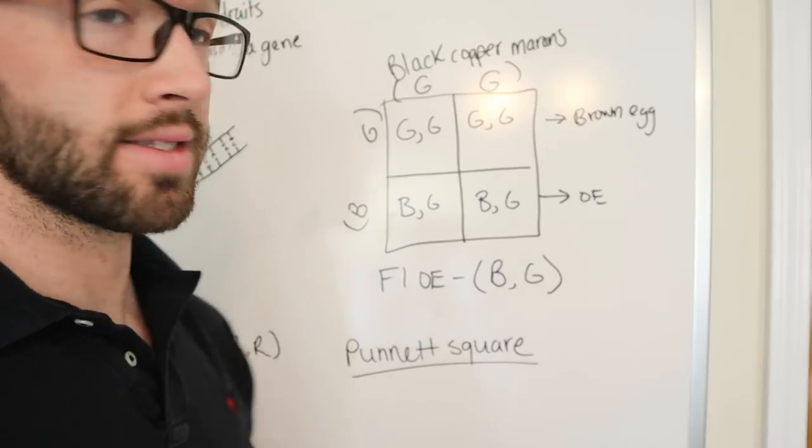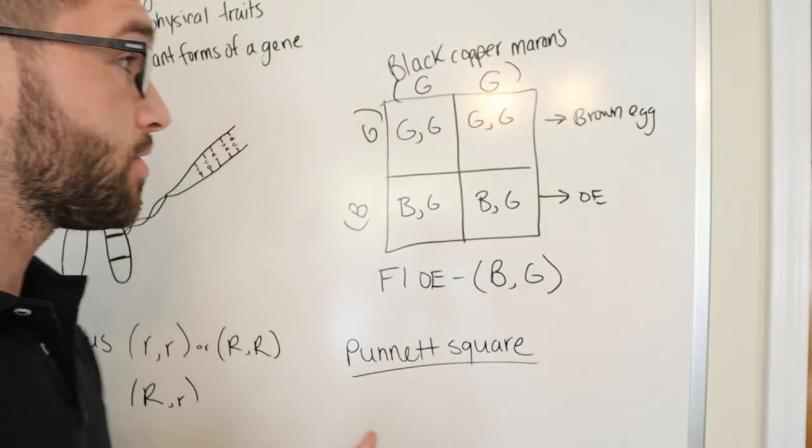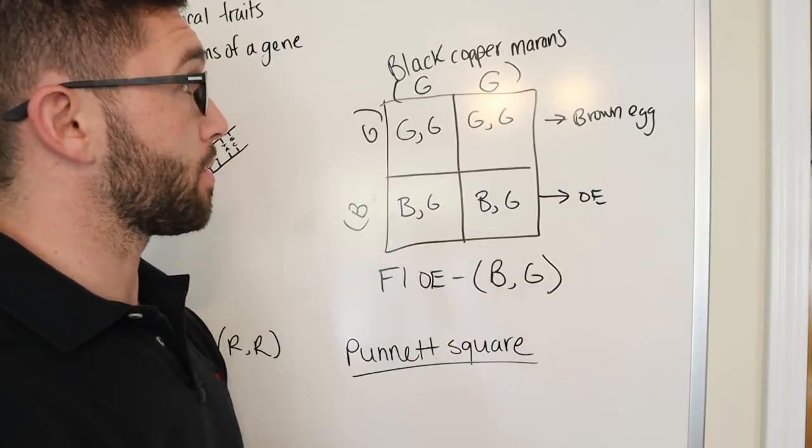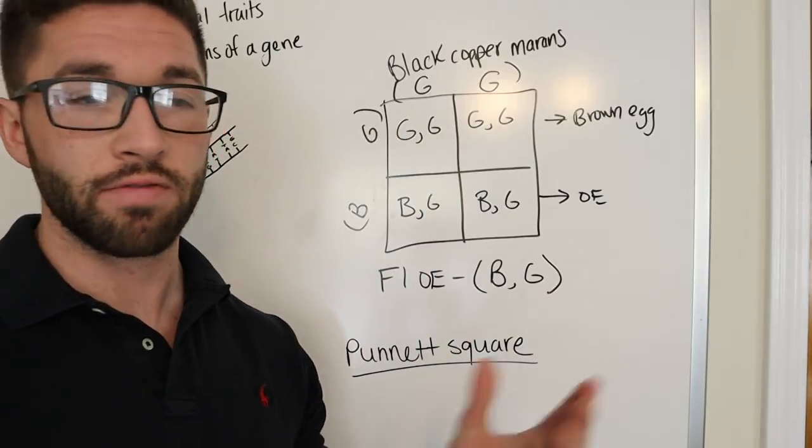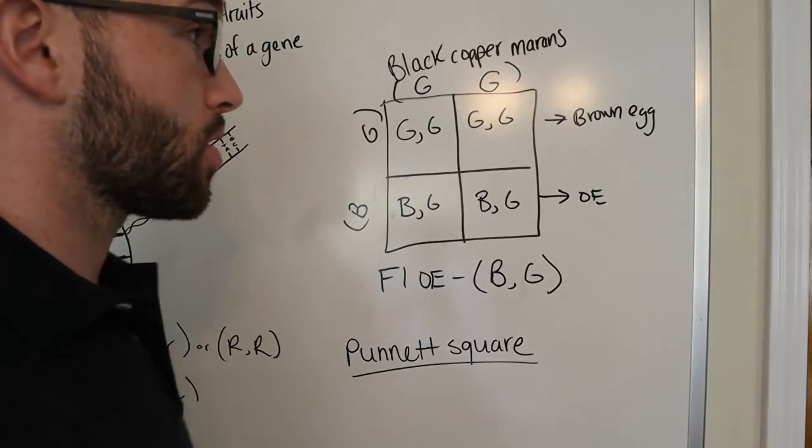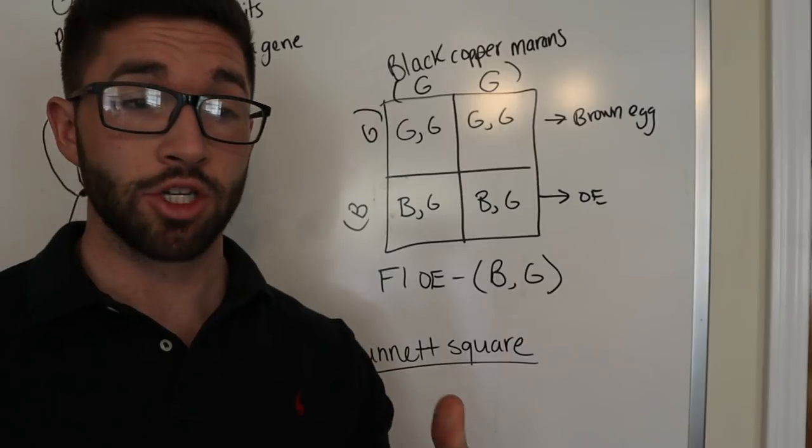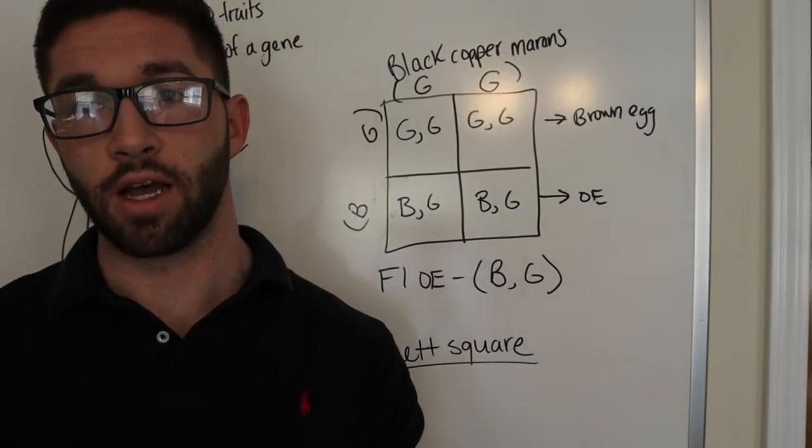And continuing on to F2, F3, F4. If you're continually crossing with an olive egger back to a Black Copper Maran, for instance, you'll always have a 50-50 shot. And so, in the case for crossing back to a blue egg layer, you'll have a 50% chance of a blue egg layer, a 50% chance of an olive egger again. So, nothing's ever 100% after the first cross.